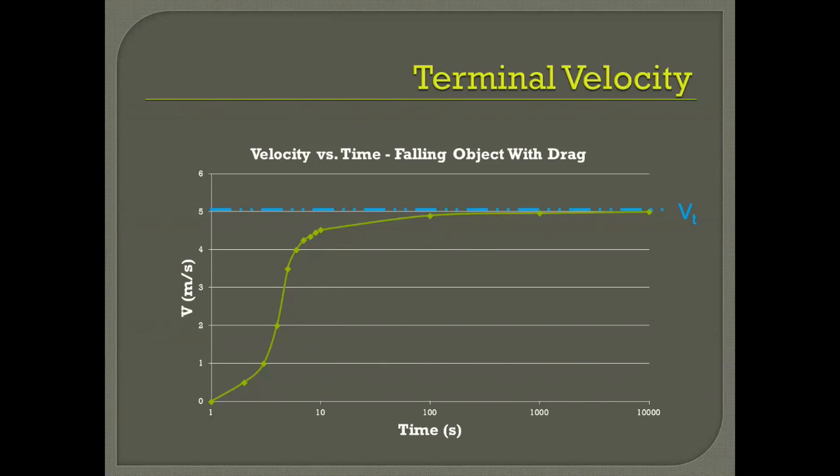When the drag force increases, the acceleration begins to become smaller, and the velocity increases less rapidly. For long times, the acceleration goes to zero, and we see that the green line approaches the blue line. On this graph, the blue line is the terminal velocity.